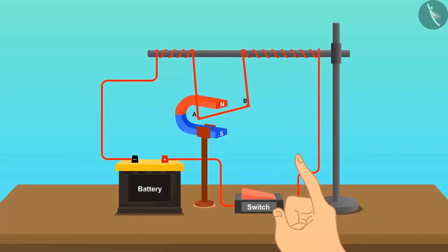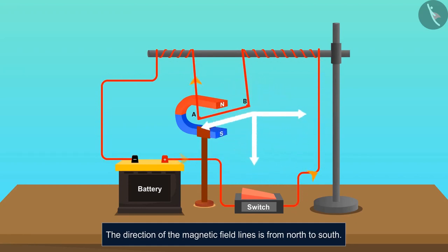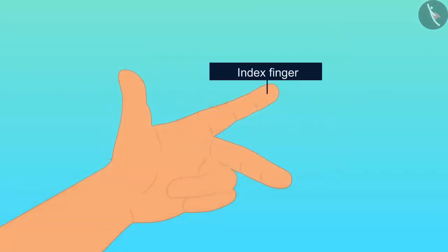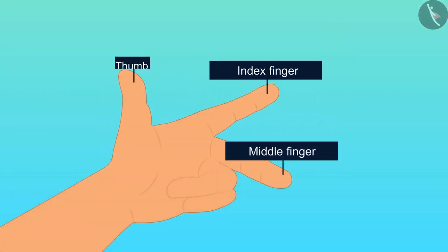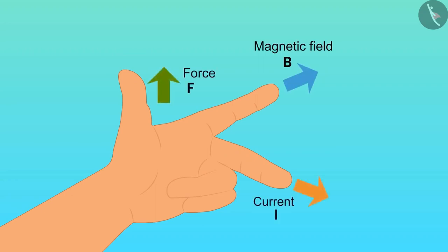Looking closely, we can find a pattern. The direction of magnetic field lines is from north to south. When the current was flowing in one direction, the deflection was in a certain direction. Rotating the picture shows that all three components — force, current, and magnetic field — are perpendicular to each other. The relation among force, electric current, and magnetic field is known as Fleming's left-hand rule. This rule states: stretch the index finger, middle finger, and thumb of the left hand so that all three are mutually perpendicular. The index finger points in the direction of the magnetic field, the middle finger in the direction of the current, and the thumb shows the direction of the force.